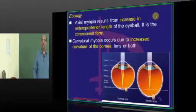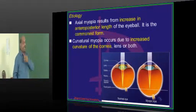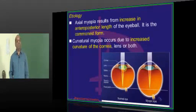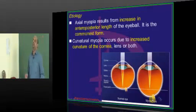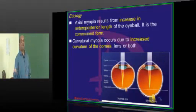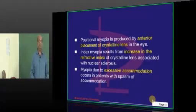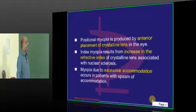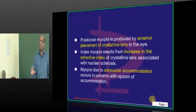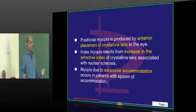We have axial myopia where there is an increase in the anterior-posterior length of the eyeball, which is the commonest cause. Then we have curvaceous myopia due to increased curvature of the cornea. Then positional myopia due to improper positioning of the crystalline lens. Then index myopia — any condition which increases the refractive index, like nuclear sclerosis, can lead to myopia.